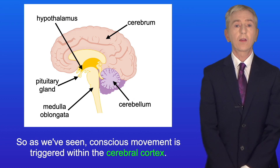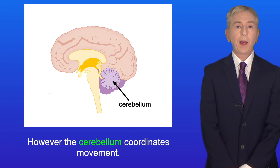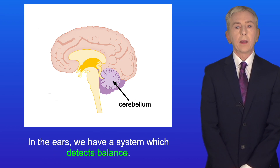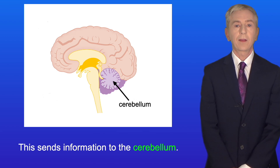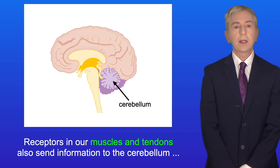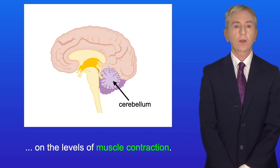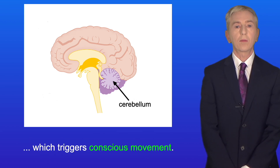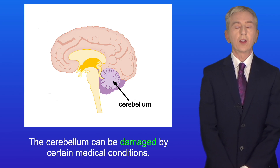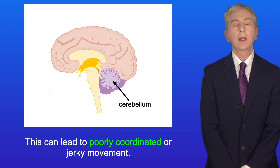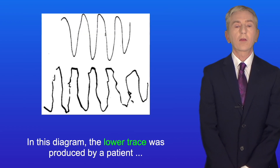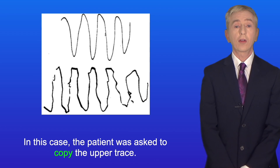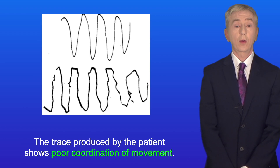While conscious movement is triggered within the cerebral cortex, the cerebellum coordinates movement. We find the cerebellum at the base of the brain towards the back. In the ears we have a system which detects balance, sending information to the cerebellum. Receptors in our muscles and tendons also send information to the cerebellum on levels of muscle contraction. The cerebellum then passes information to the primary motor cortex, which triggers conscious movement. Damage to the cerebellum can lead to poorly coordinated or jerky movement — as shown in this diagram, where a patient with a cerebellar disorder produced a lower trace showing poor coordination when asked to copy the upper trace.